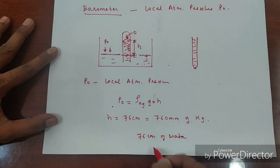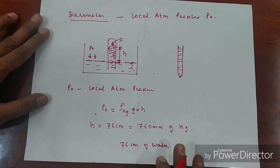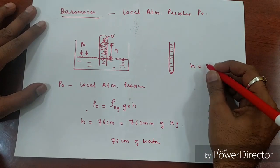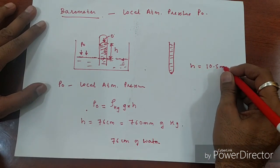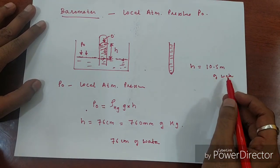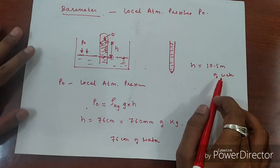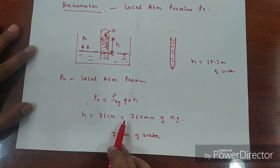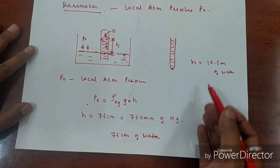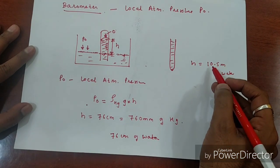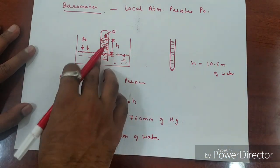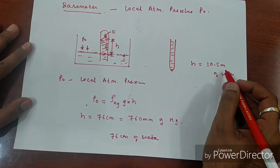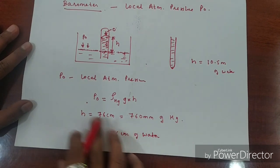If you take water in this experiment instead of mercury, the height would be equal to 10.5 meters of water. The pressure created by 10.5 meters of water is equal to the pressure created by 76 centimeters of mercury. It is very difficult in the lab to use a tube of more than 10.5 meters in height, so that is the reason we take mercury in this experiment.